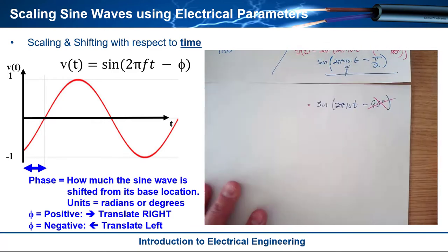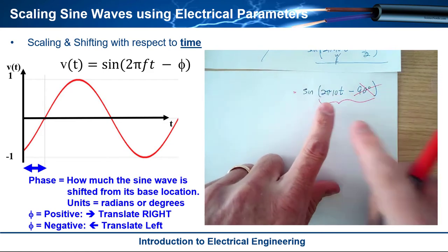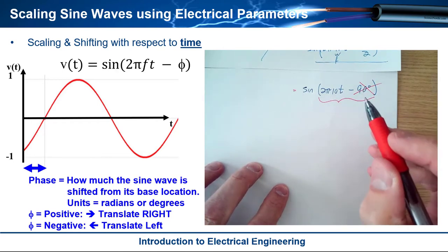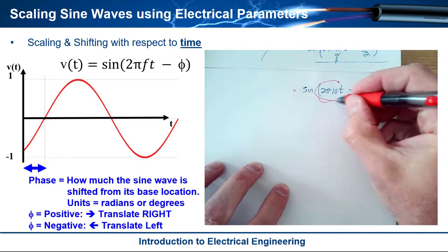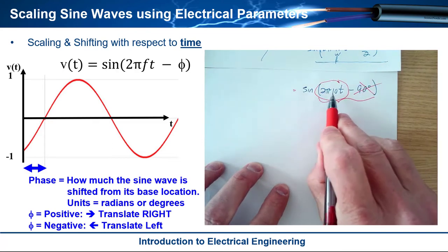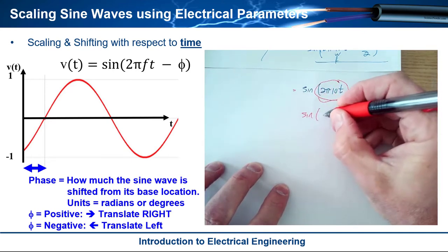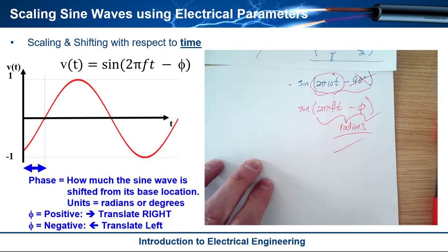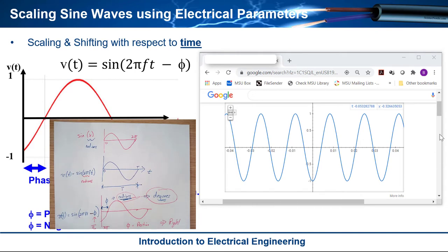That's really the only confusing thing about phase shift — they're relatively straightforward once you understand it. Just remember you have to convert from degrees to radians to have a complete argument in radians. If you put your calculator in degrees mode, you'd have to convert the entire time-varying component into degrees too, which doesn't make much sense. In electrical engineering, just stay in radians: 2πft − φ, where the entire argument is in radians.